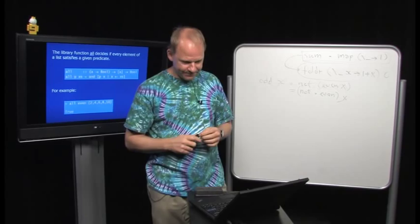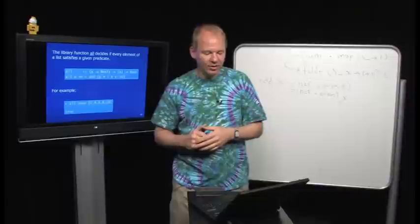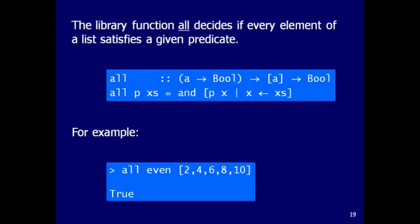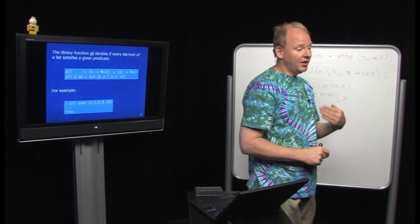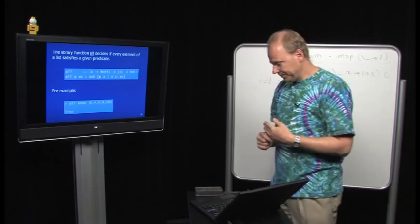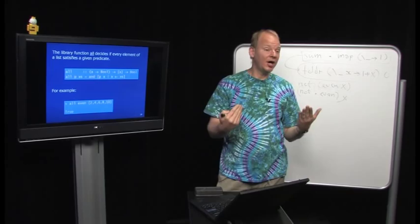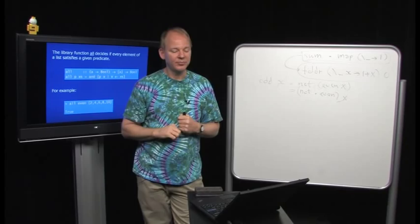`all` takes a predicate and a list and returns a Bool indicating whether every element satisfies the predicate. We map the predicate over the list (using a list comprehension) and then apply `and`. Since this is a map followed by a fold, you can write it directly as a `foldr` — eliminating the intermediate structure and giving a more efficient definition.